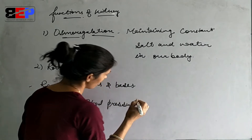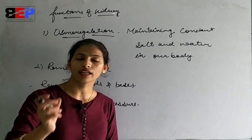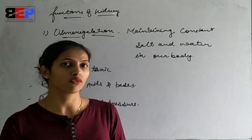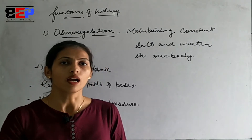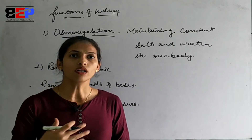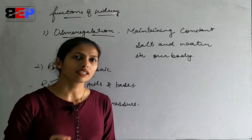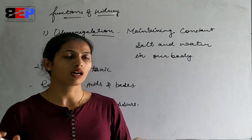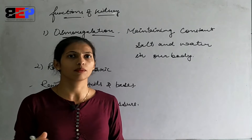If the kidney is working properly, the body functions well. If water increases in the body, the amount of blood will increase, which in turn increases blood pressure. What does the kidney do? It increases urine formation to manage excess water and maintain normal blood pressure.